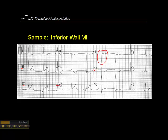If you want to be sure, and if it's practical, you can place leads V7, V8, V9 around the back on the left side — at the posterior axillary line, the mid-scapular line, and the vertebral border in line with V6 — and see if there's evidence of ST elevation in those posterior leads. It looks like posterior wall involvement here.